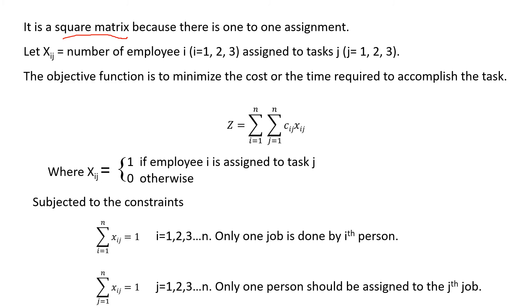The objective function is: Z equals the double summation from i=1 to n and j=1 to n of cij times xij. Because this is a square matrix, both employees and tasks run from 1 to n with the same n value. Here cij represents the cost to accomplish task j by employee i, and xij represents the amount of task j assigned to employee i.